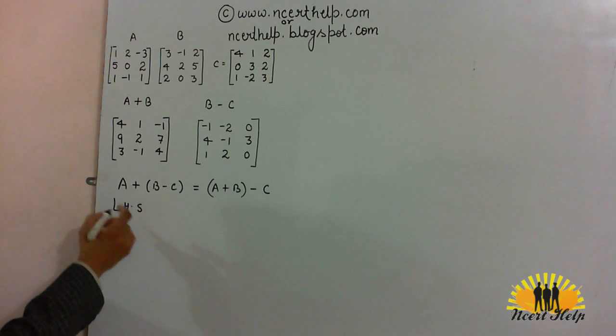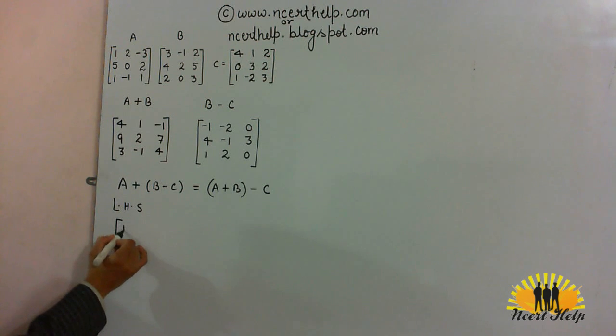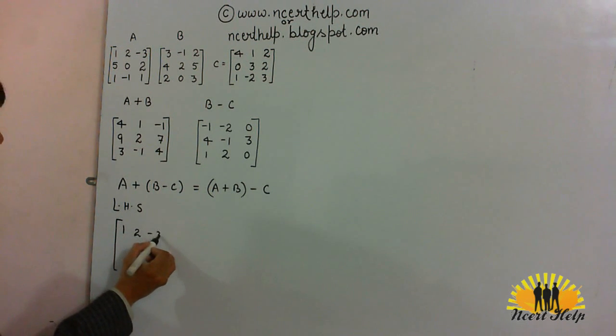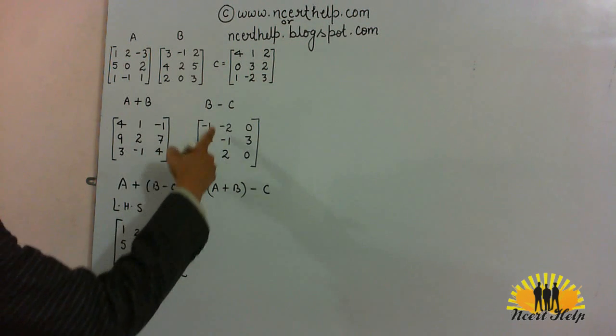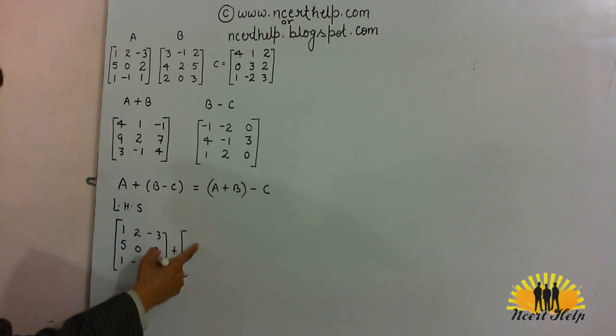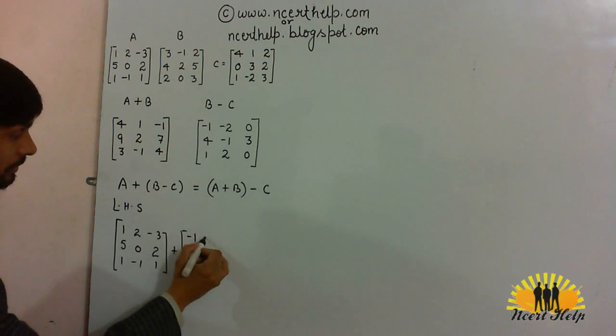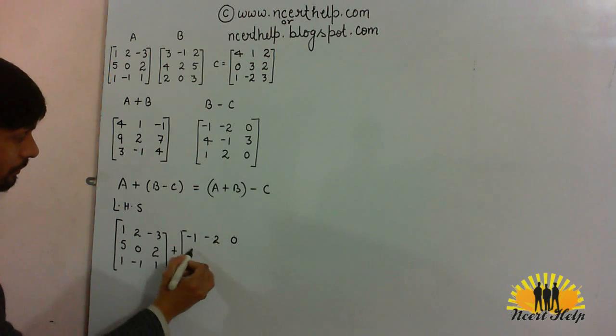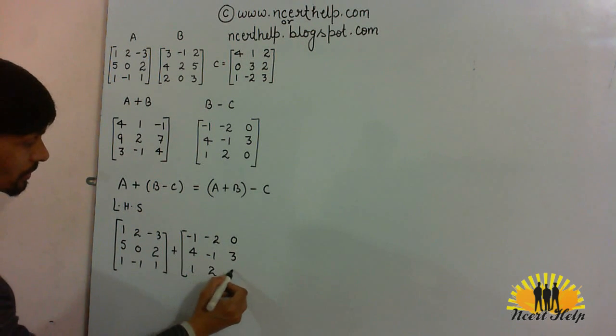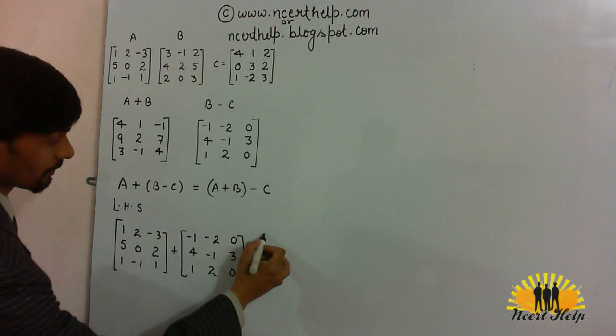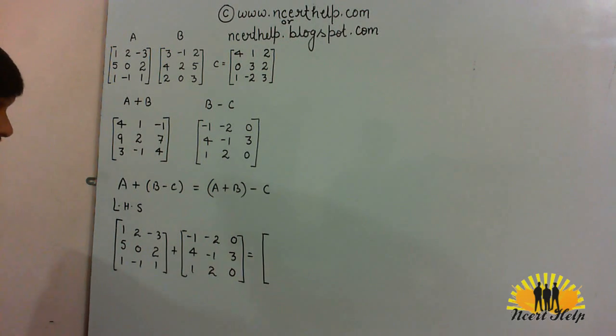So, matrix A is 1, 2, minus 3, 5, 0, 2, 1, minus 1, 1. And B minus C, as we have done it here, let's put this value here. Minus 1, minus 2, 0, 4, minus 1, 3, 1, 2, 0.